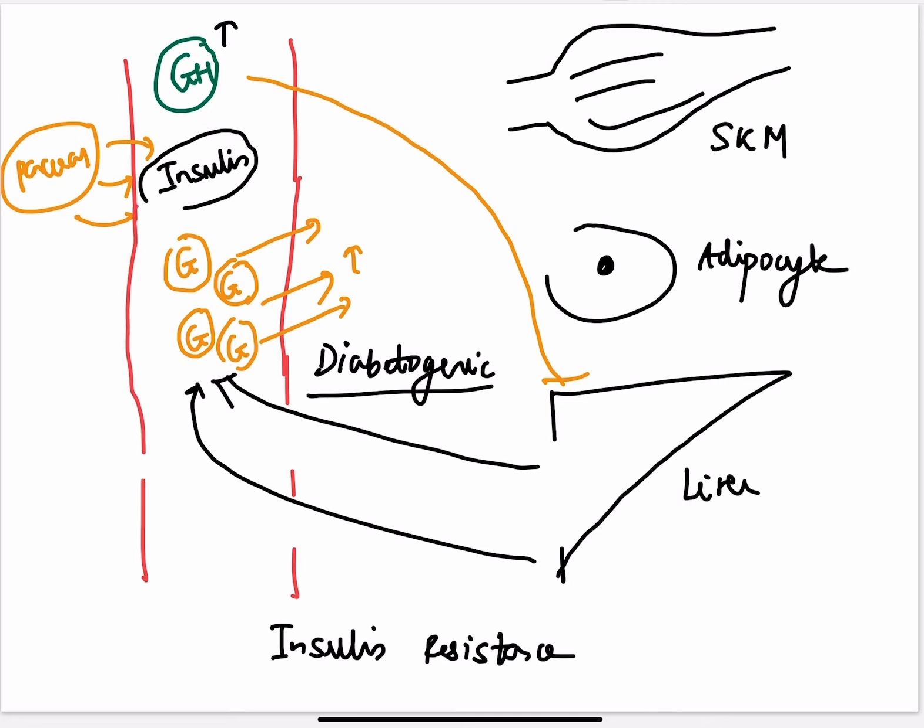So this is the third effect of growth hormone on carbohydrate metabolism. Let us quickly revise the three effects. First, it increases insulin secretion. Second, it decreases the uptake of glucose by the skeletal muscles and the adipocytes. Third, it increases the liver production of glucose.